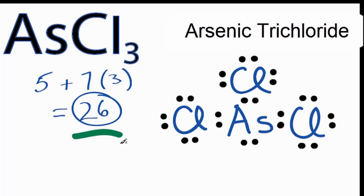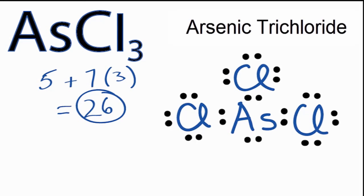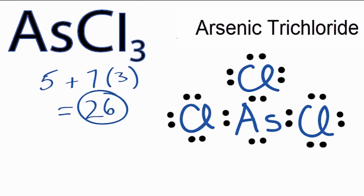So we've used all 26 valence electrons, and each of the atoms has an octet. So this is the correct Lewis structure for AsCl3, arsenic trichloride.